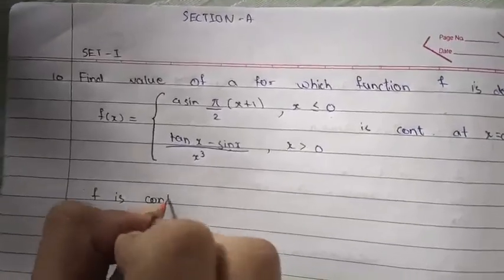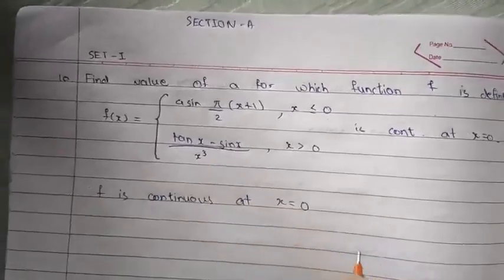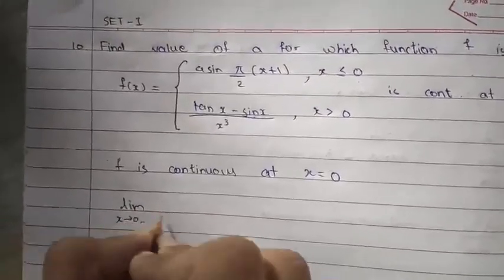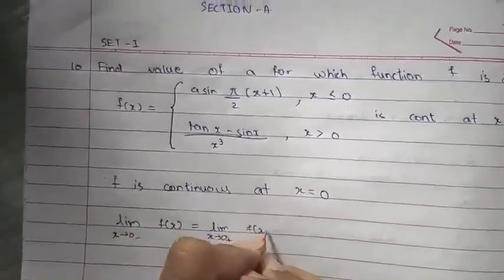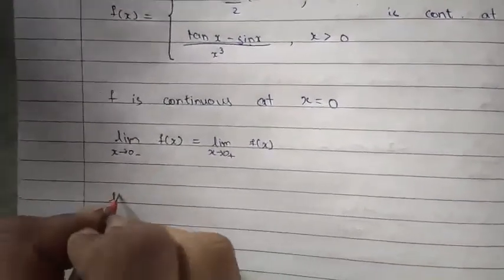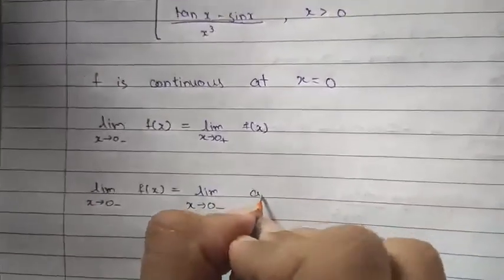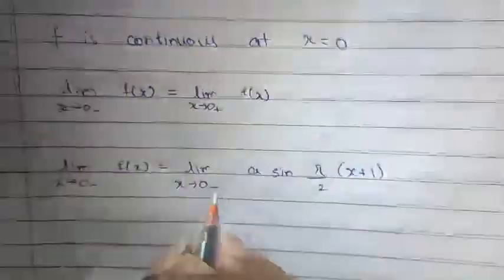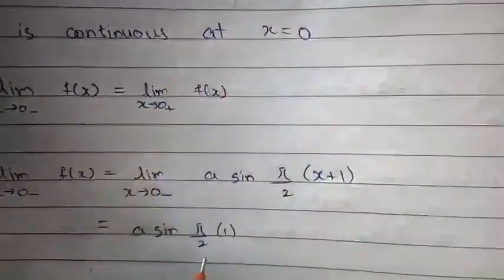Let f be continuous at x equals 0. For f to be continuous at x equals 0, the limit as x tends to 0 minus of f must equal the limit as x tends to 0 plus of f. The limit as x tends to 0 minus of f equals a·sin(π/2 · (0+1)), which gives a·sin(π/2) = a.